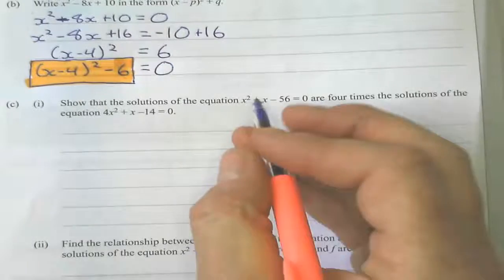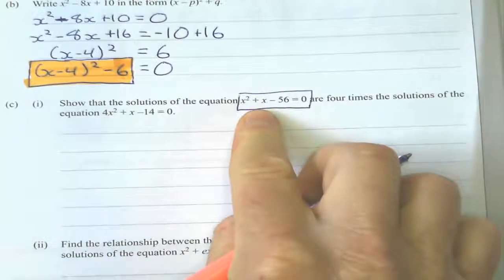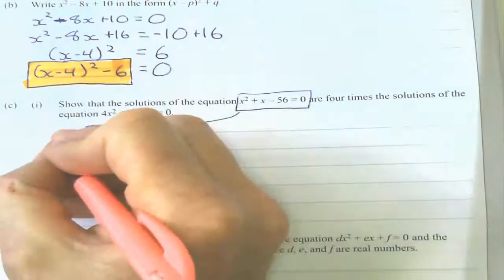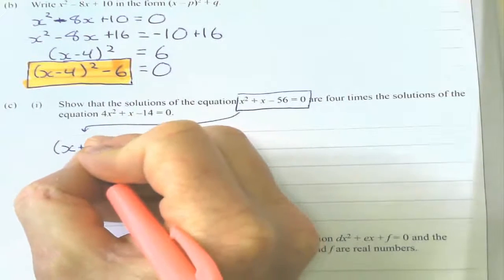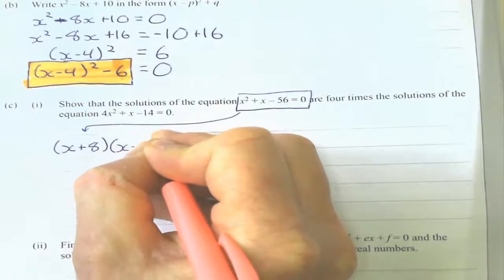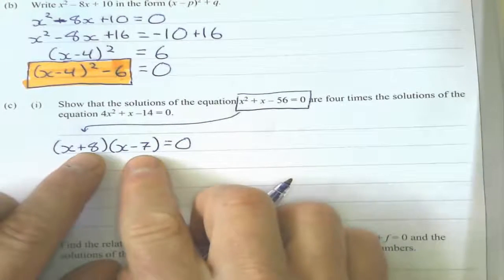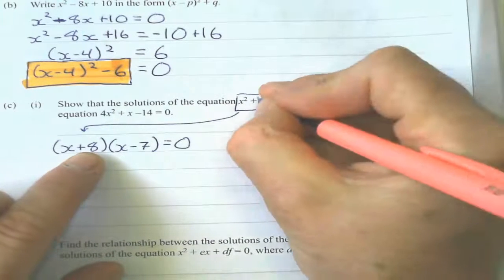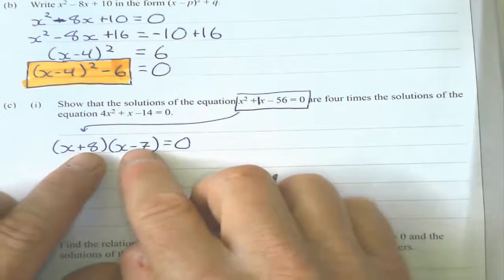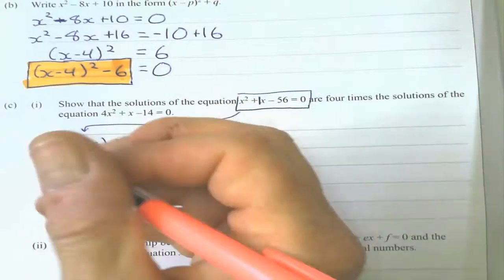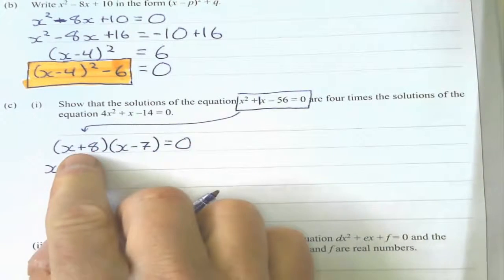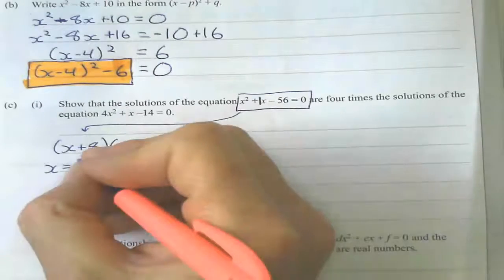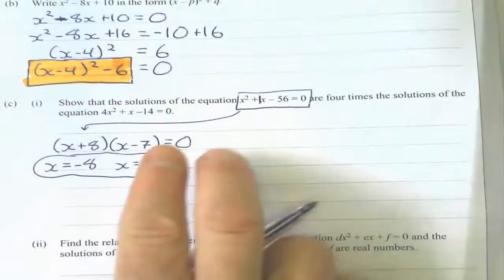Take a look at this one. Show that the solutions of this equation are 4 times the solution of this equation — basically they just want you to solve both of these equations and compare their answers. This first equation is a pretty simple factorizing one. It factorizes to x plus 8 times x minus 7 equals 0. The product of negative 56 and the sum of positive 1 — two numbers that multiply to get negative 56 and add to get positive 1 are positive 8 and negative 7. So my solutions using the zero product property are negative 8 and positive 7.